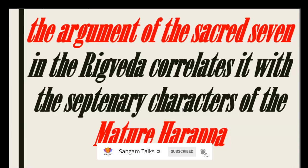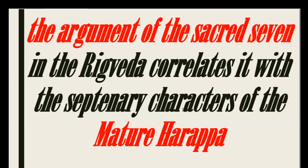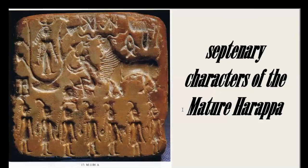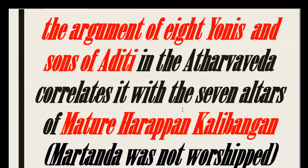The first is the argument of the sacred seven. In the Rig Veda it correlates with the centenary characters of Mature Harappa. The sacred seven is the core of the symbolic teaching of the Rig Veda. On Mature Harappan seals from Harappa and Mohenjo-daro we can find septenary, seven-fold symbolism — at least three items with this symbolism exist in the Mature Harappan record. The next argument concerns the eight units and sons of Aditi in the Atharva Veda, which correlates with the seven altars of Mature Harappan Kalibangan.